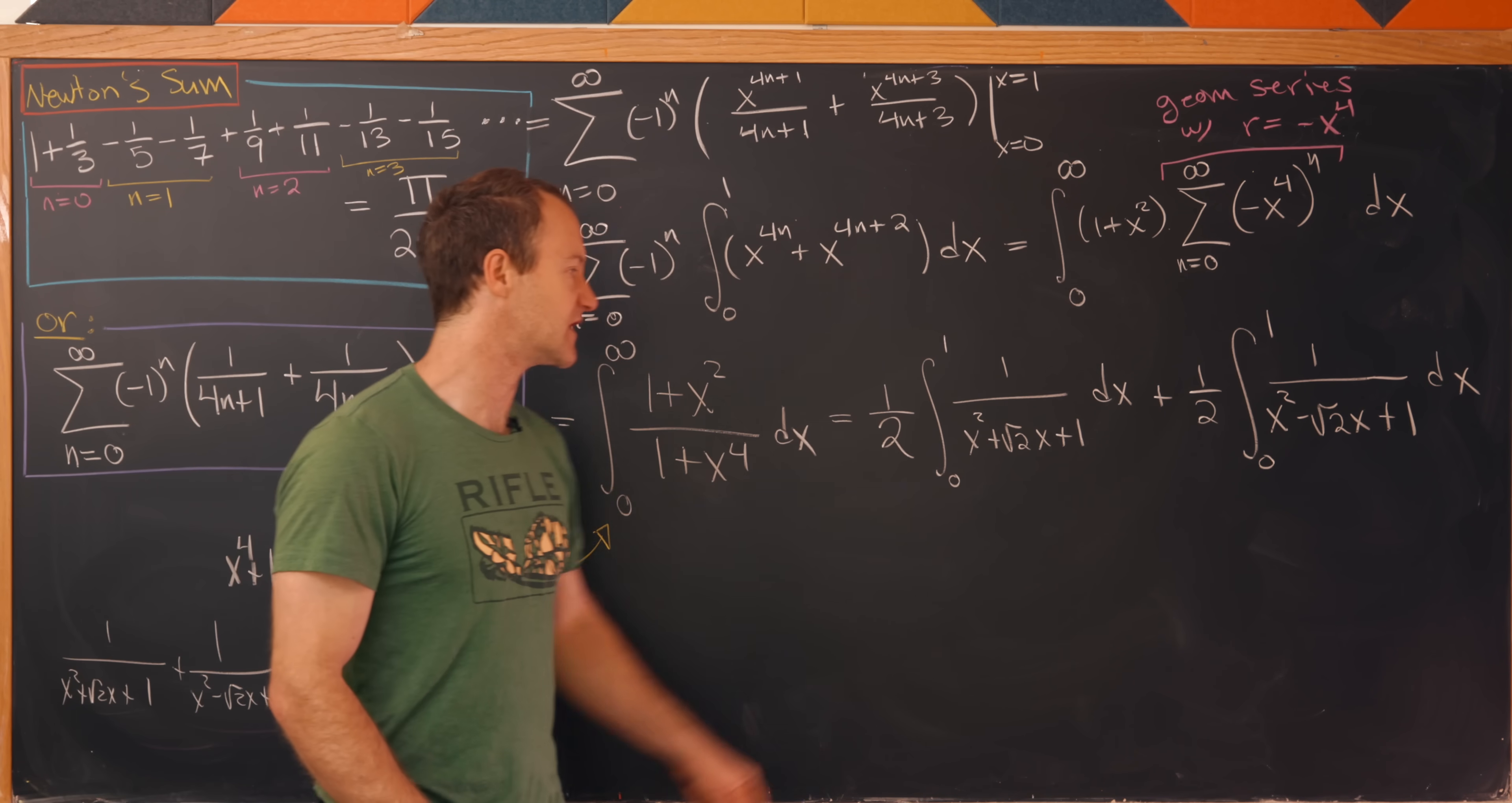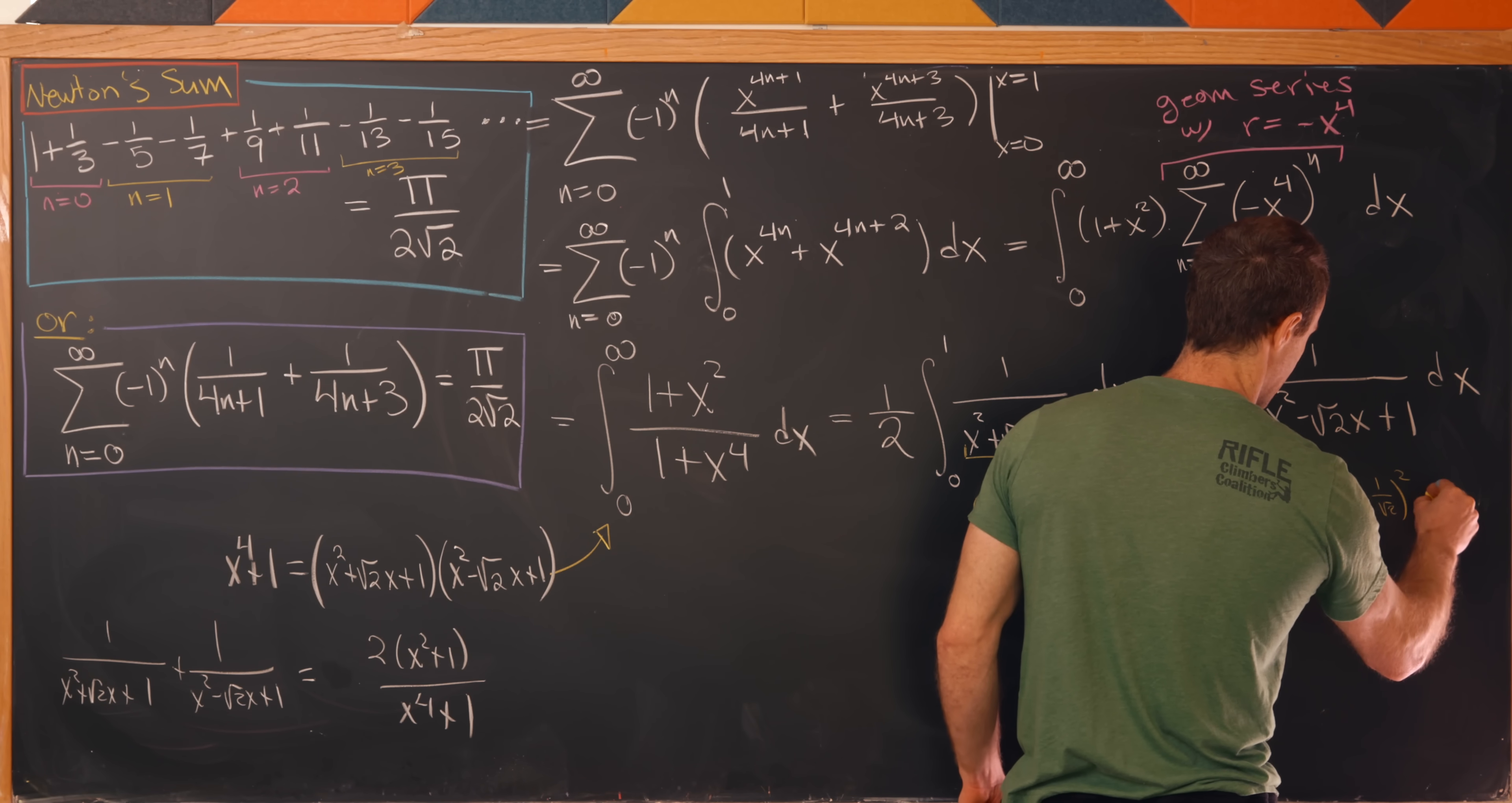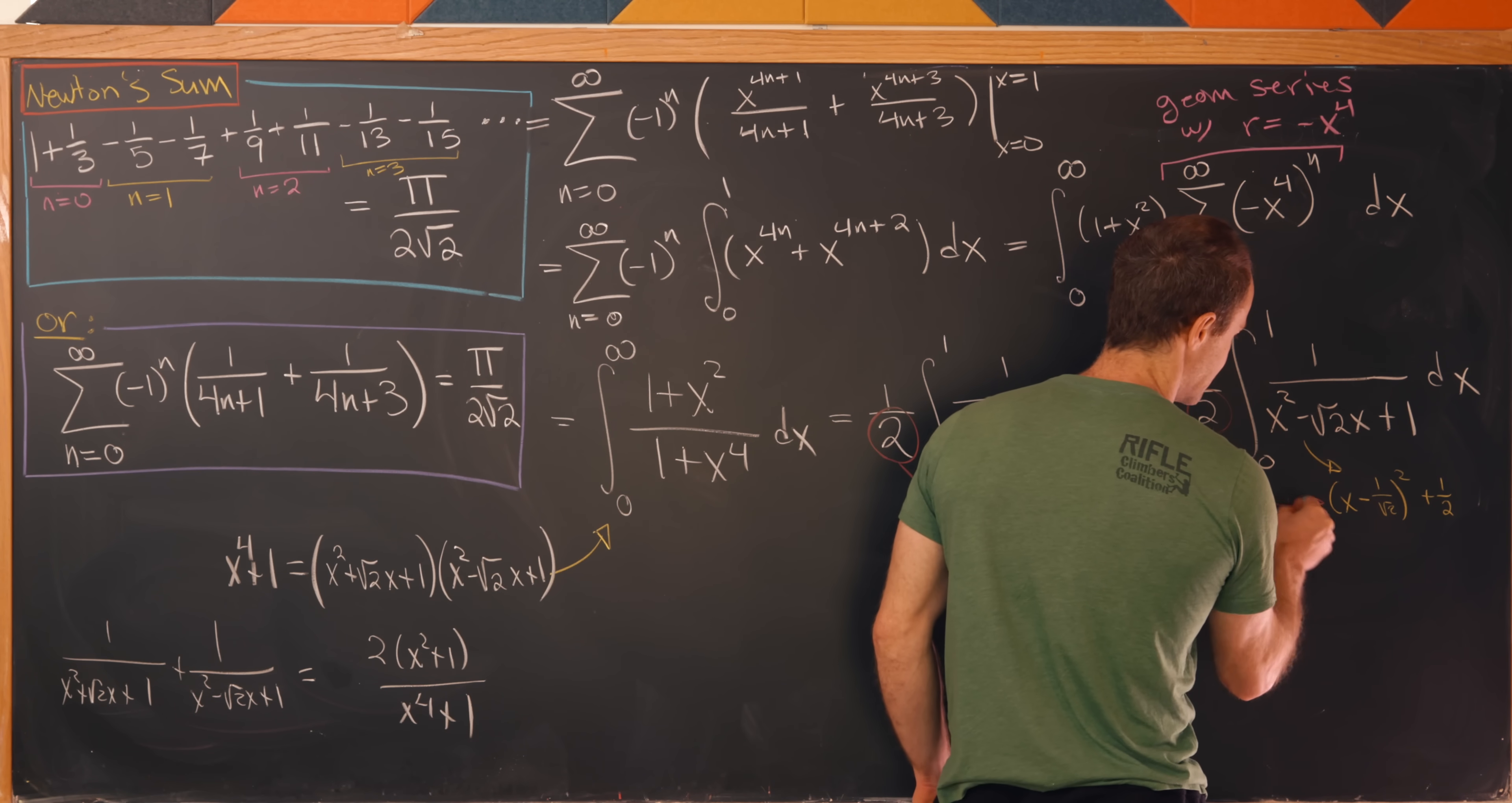Now what I'd like to do is complete the square of each of these denominators. So let's look at this first one. We can complete the square as (x + 1/√2)^2 + 1/2. And then we can complete the square here very similarly as (x - 1/√2)^2 + 1/2. And then what I'll do is I'll take this 2 and I'll multiply it into this (x + 1/√2)^2, and I'll also multiply it onto this 1/2. So this 2 is in the denominator and that half is in the denominator, so that's how we can do that to get a nice simplification. And then we'll do the same thing here as well.